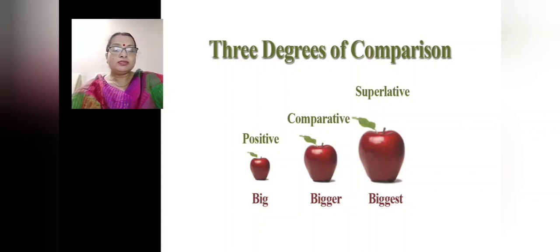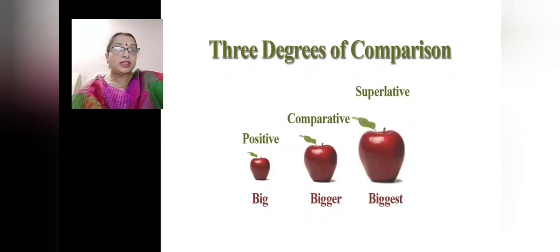Can you see the picture in front of you? What do you see? Which word is written? Big. It tells about the positive degree. Bigger — comparative. And biggest — superlative.